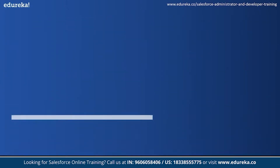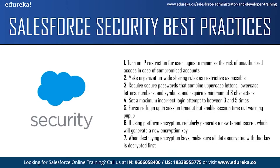Now for the final topic — Salesforce security best practices. First, turn on IP restriction for user logins to minimize the risk of unauthorized access. Second, make organization-wide sharing rules as restrictive as possible while allowing normal business functions, and use role hierarchy, sharing rules, and permission sets to extend access. Third, require secure passwords combining uppercase and lowercase letters, numbers, and symbols with a minimum of eight characters. Fourth, set the maximum incorrect login attempts to between three and five. Fifth, ensure users re-login upon session timeout but enable session timeout warning popups. Sixth, if using platform encryption, regularly generate a new tenant secret to create a new encryption key, and when destroying encryption keys, ensure all data encrypted with that key is decrypted first.